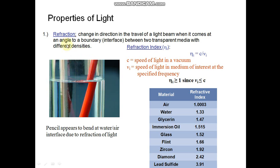Properties of light. Refraction: Change in direction in the travel of light beam when it comes at an angle to a boundary interface between two transparent mediums with different densities. See here, pencil appear to bend at water-air interface due to refraction of light.